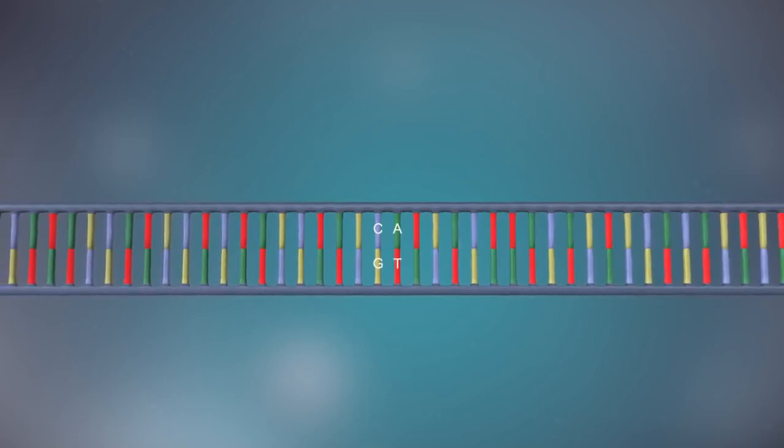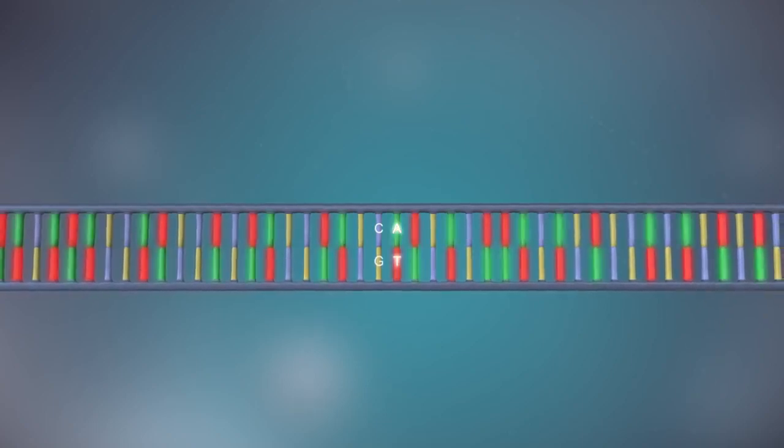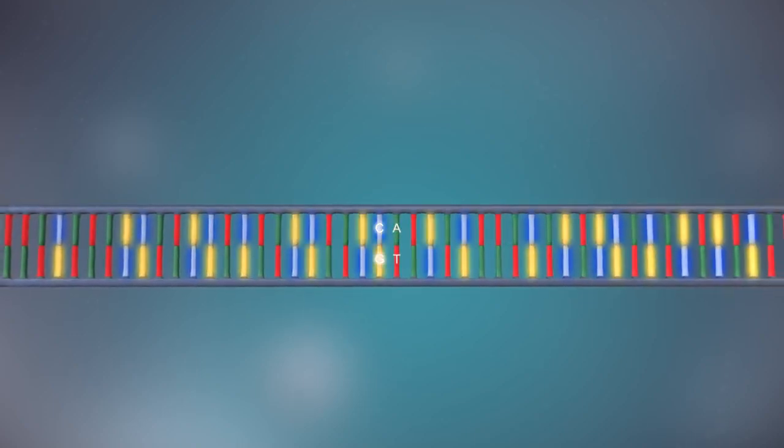The two strands are complementary. This means that wherever there's a T in one strand, there will be an A in the opposite strand, and wherever there's a C, there will be a G in the other strand.